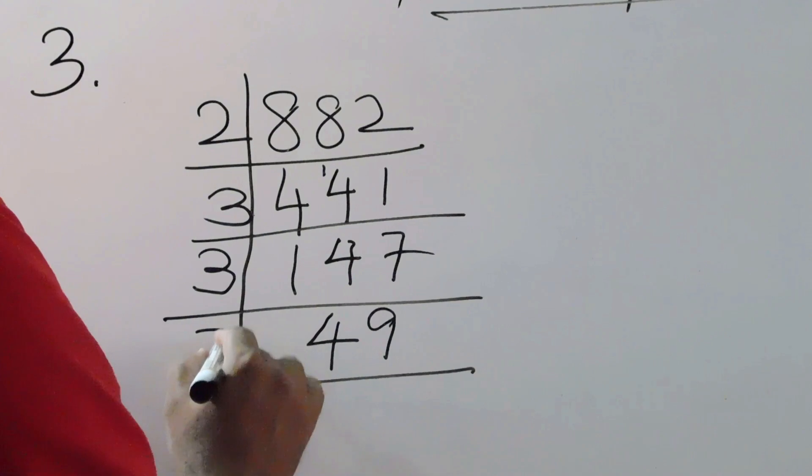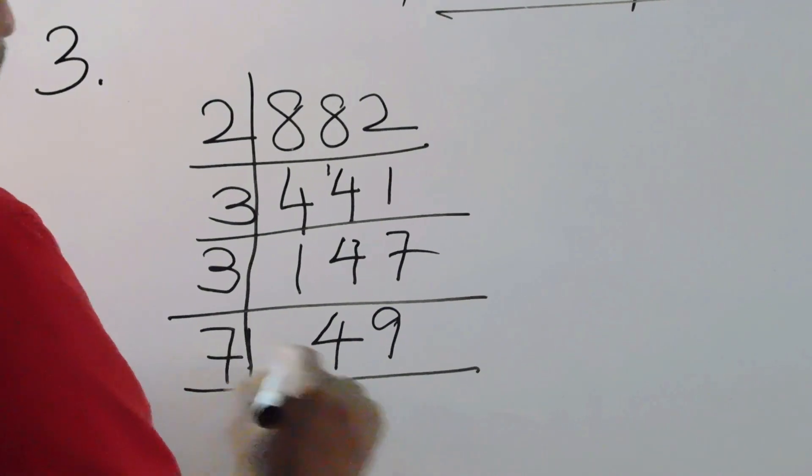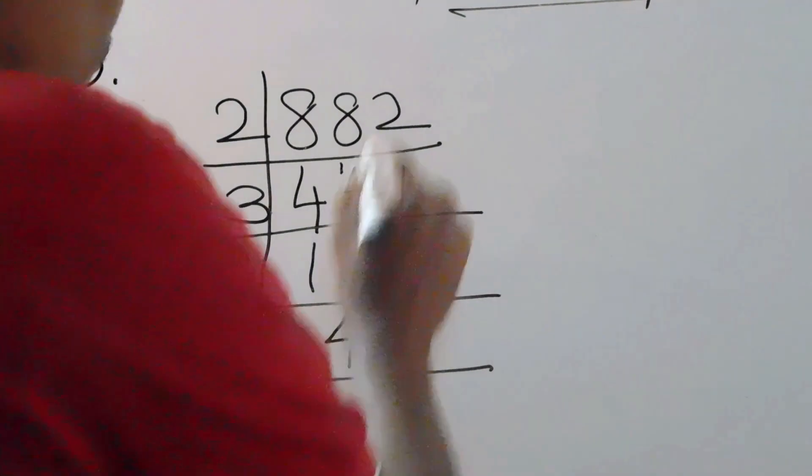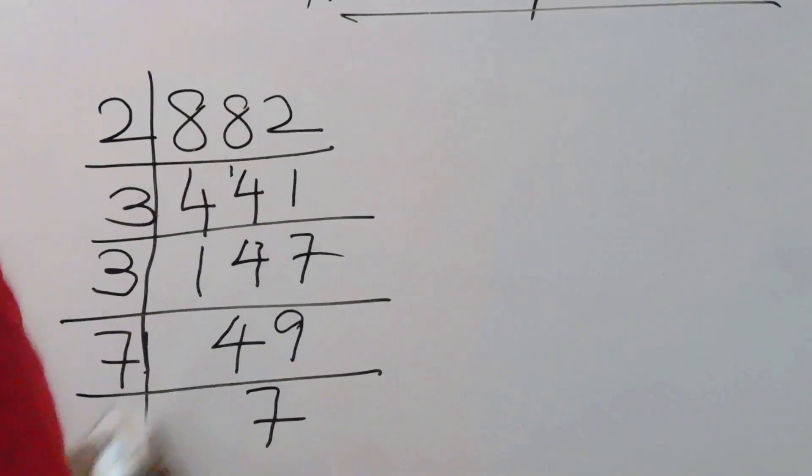Now 49 can be divided by 7: 7 times 7 is 49. So we have two 7s.